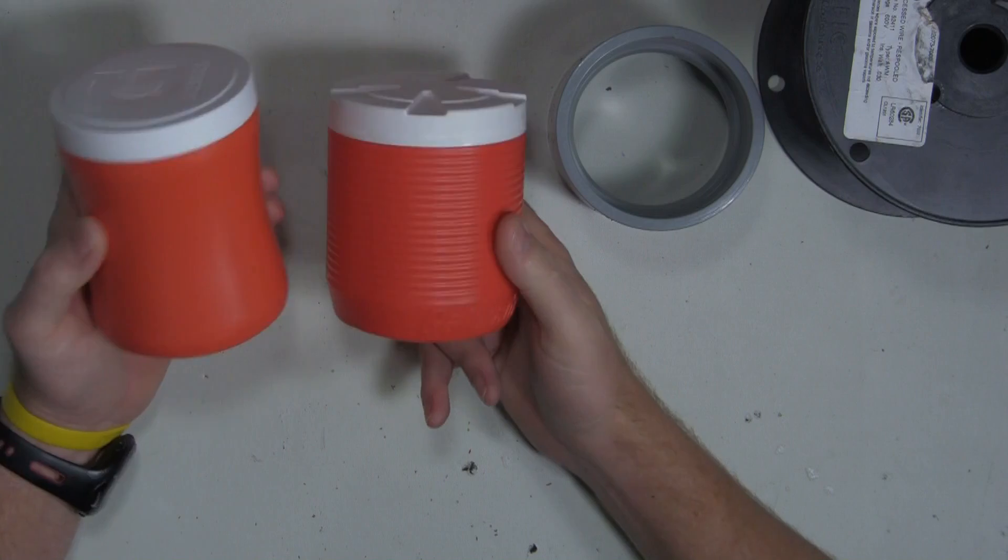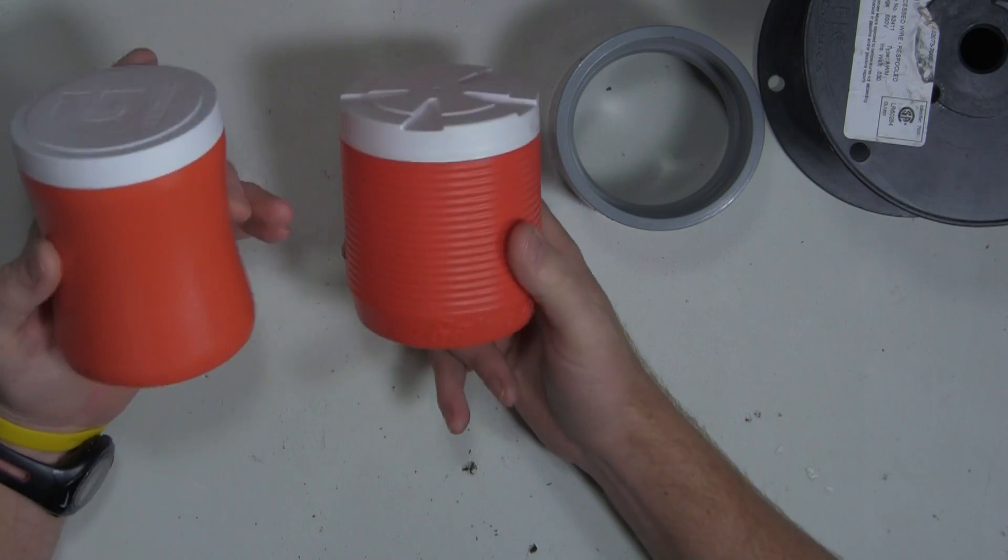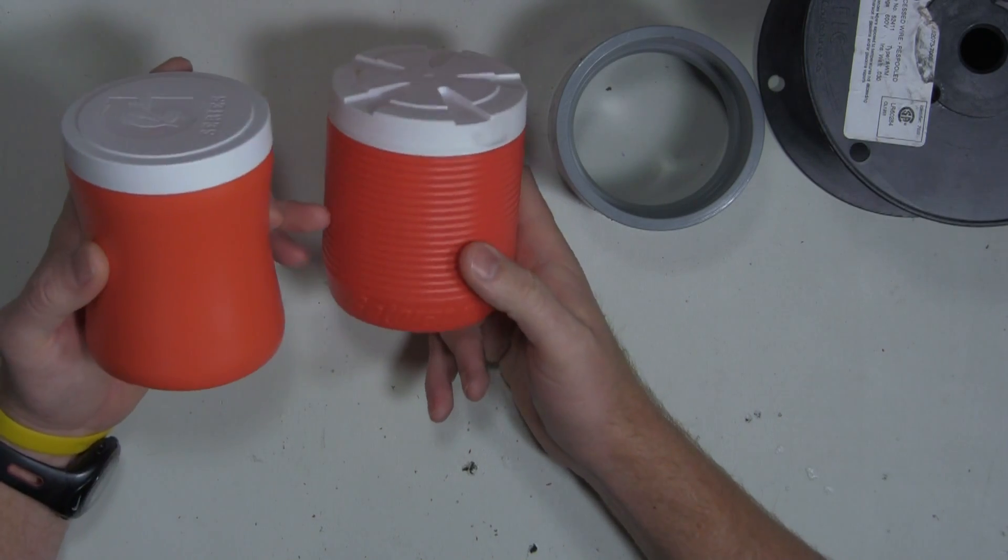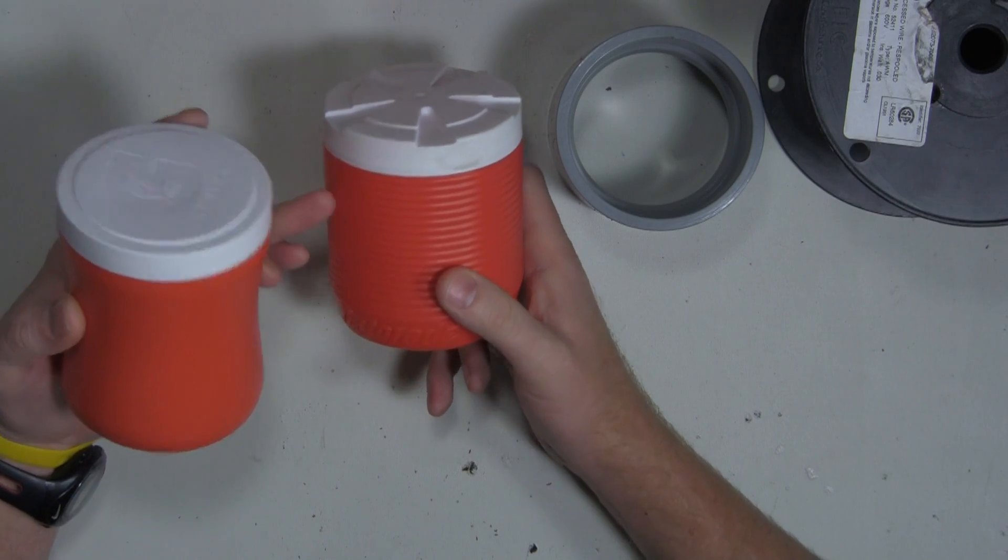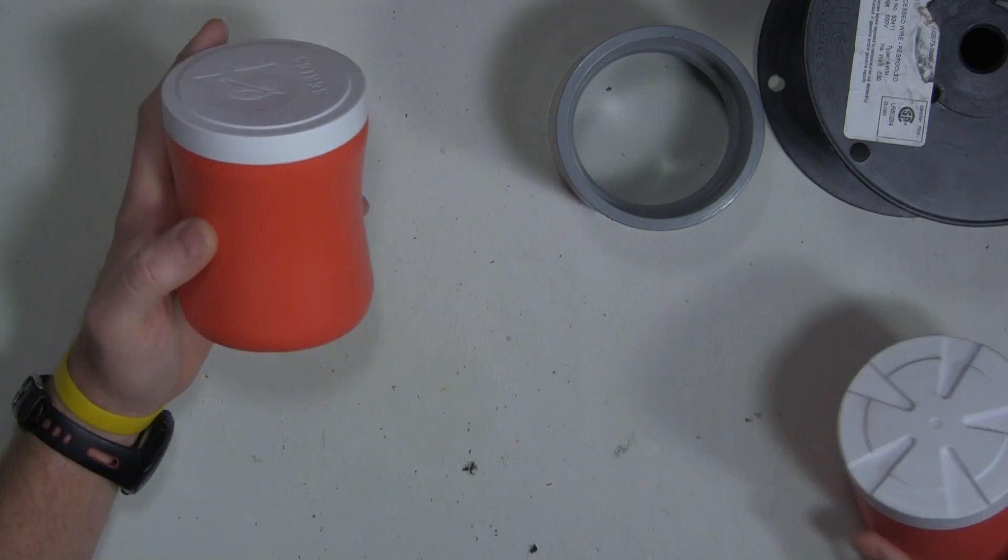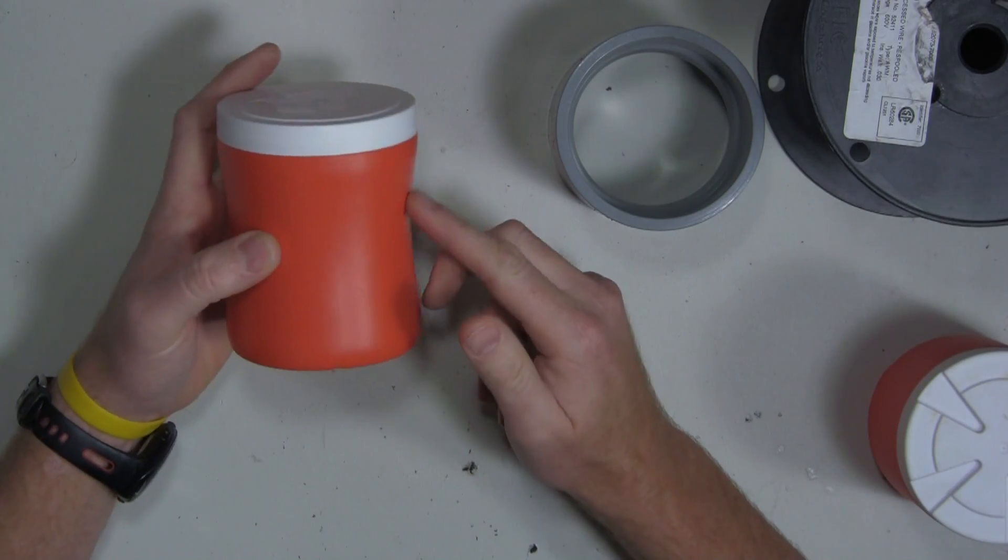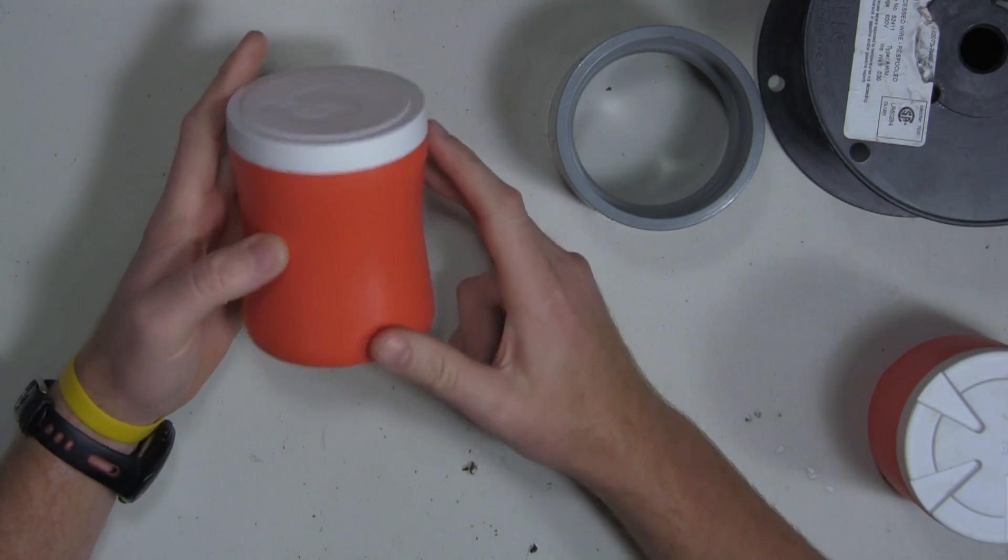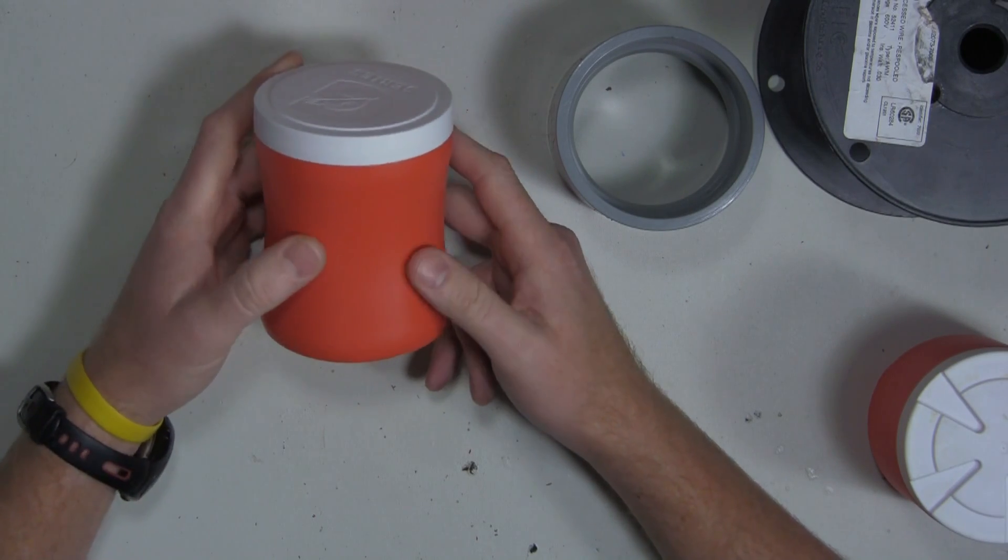Back in the day, these Gatorade containers used to be like this. They looked like the igloo coolers that they made and this would have been real easy to do. The wiring could actually fit into this pretty easy but now with it being shaped like this with this concave all the way around the circumference of the container,